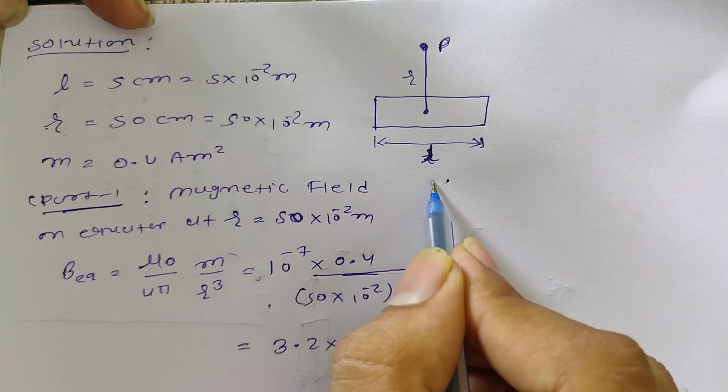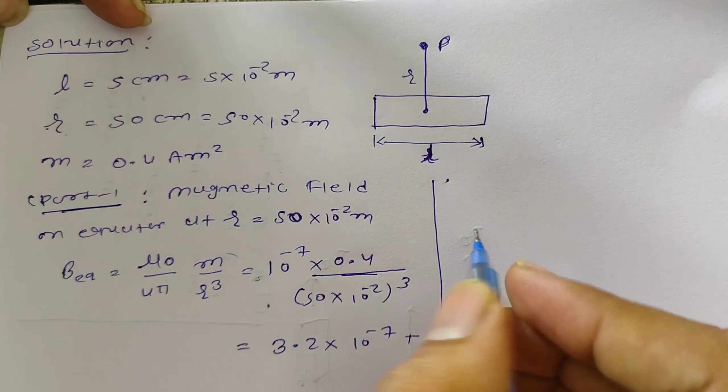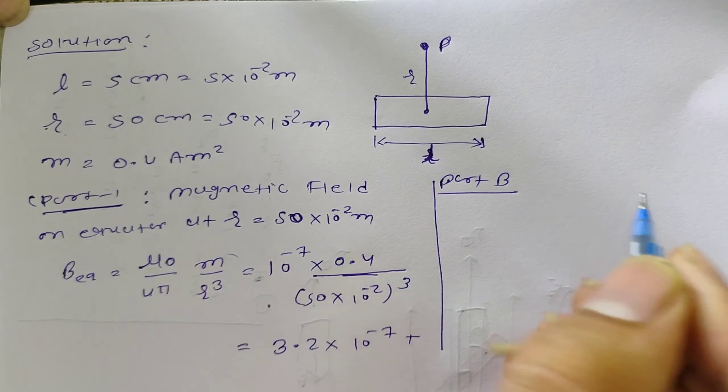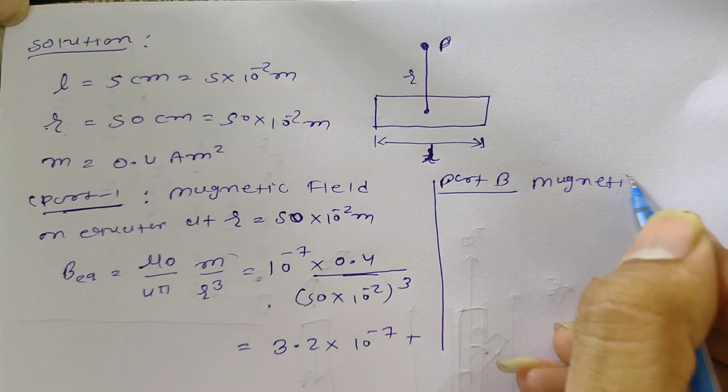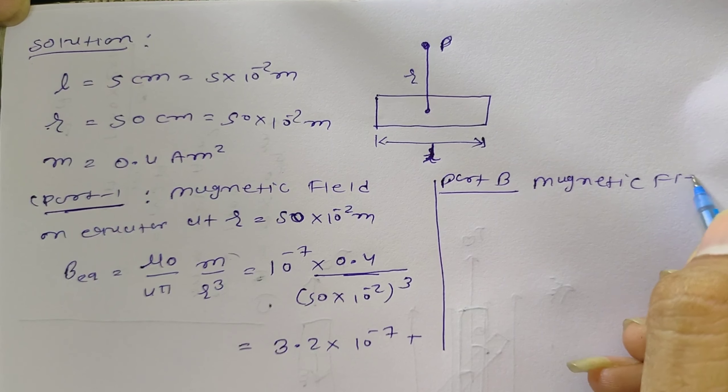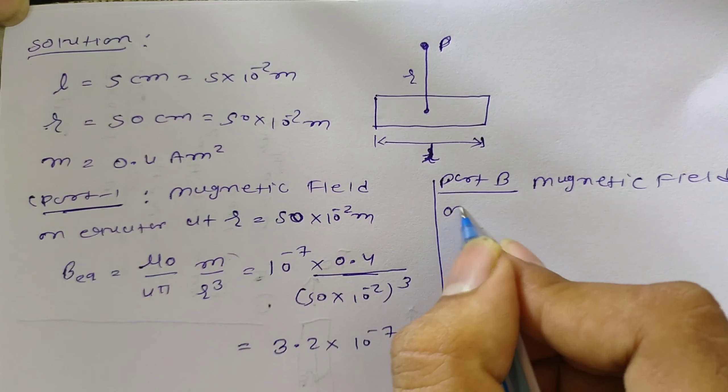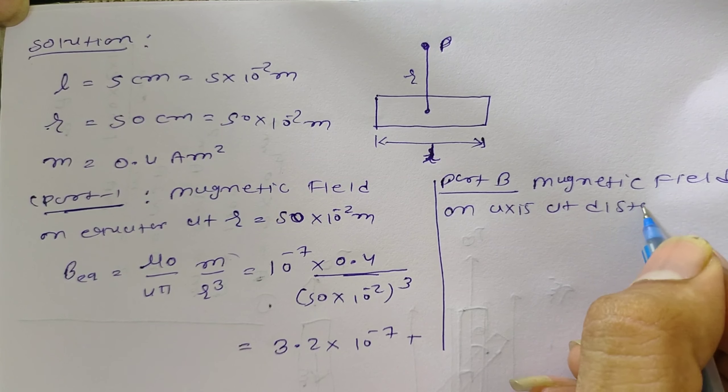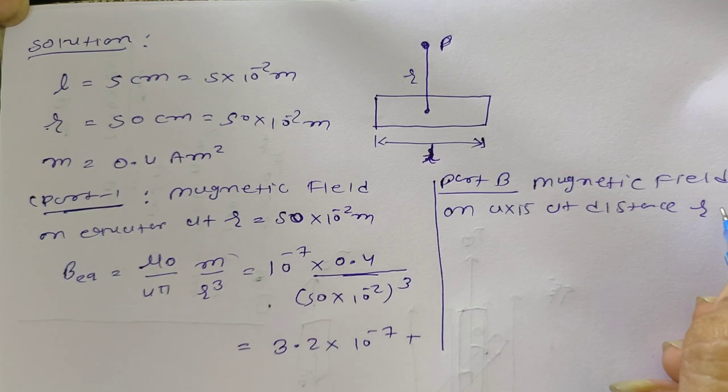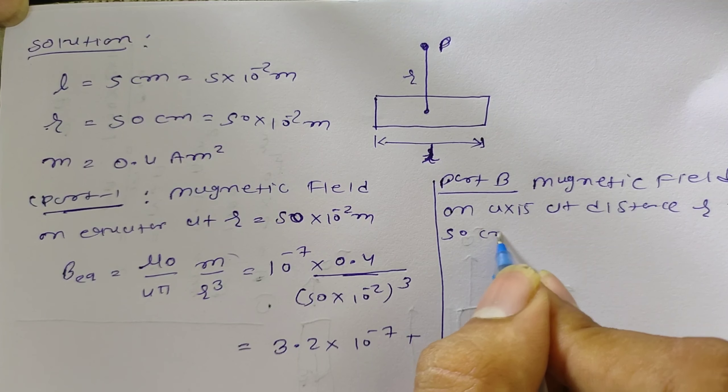In part B of this problem, what we have to find out? Part B, magnetic field on axis at distance R equal to 50 cm.